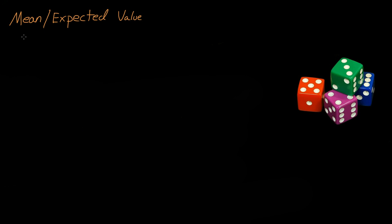This is a quick video over the mean or expected value. We can have mean or expected value represented two ways: the Greek symbol mu, or a function e of some variable — we're just going to use q. These mean the same thing. Mean just means the average, and the expected value of q is the value you would expect q to be — the average q.